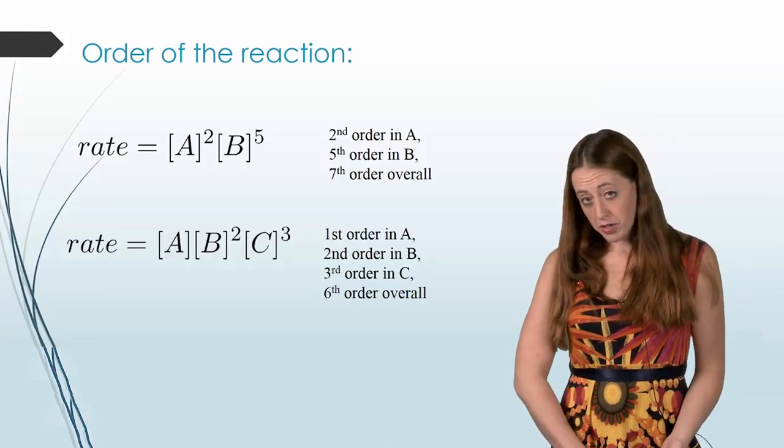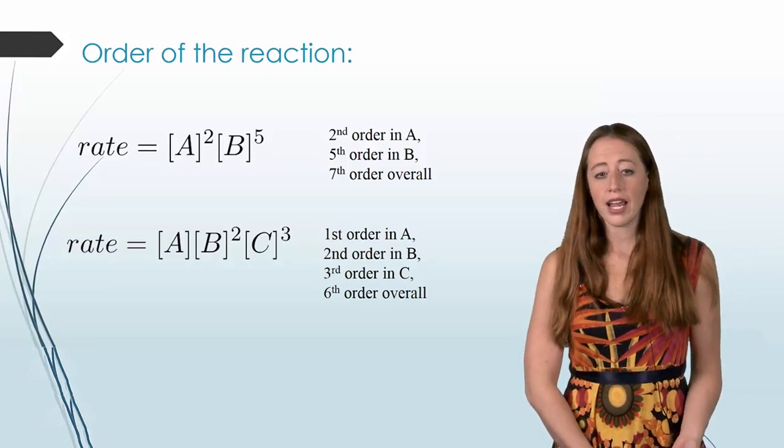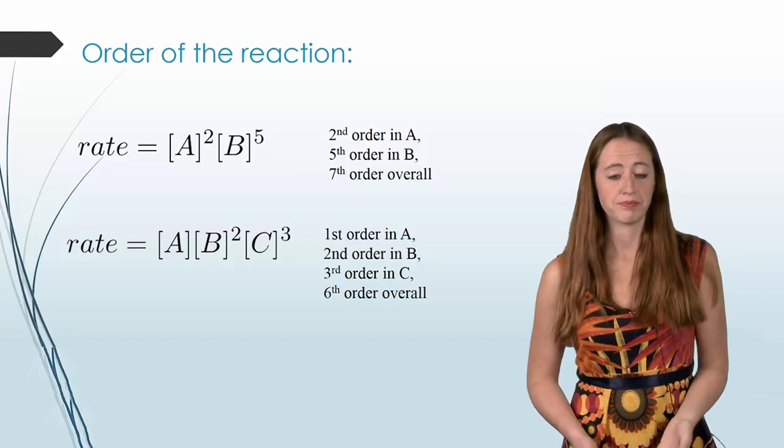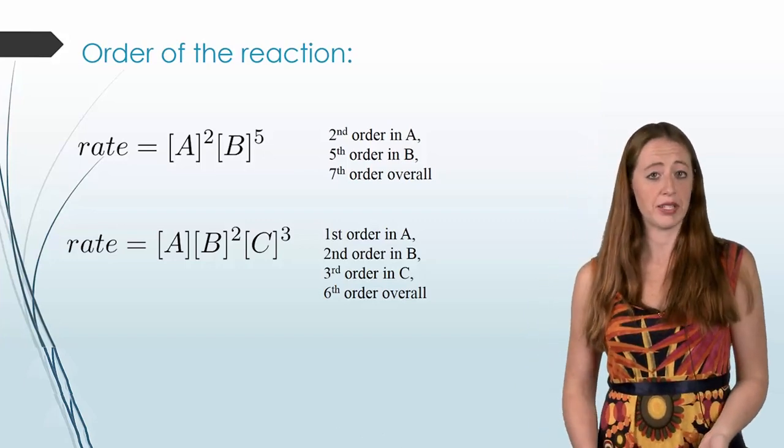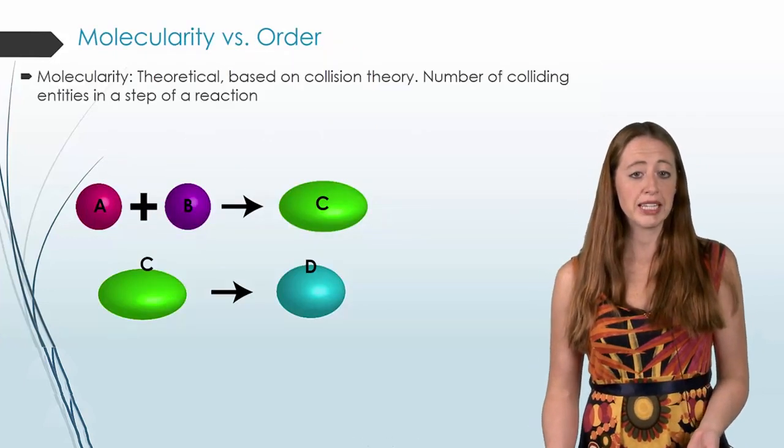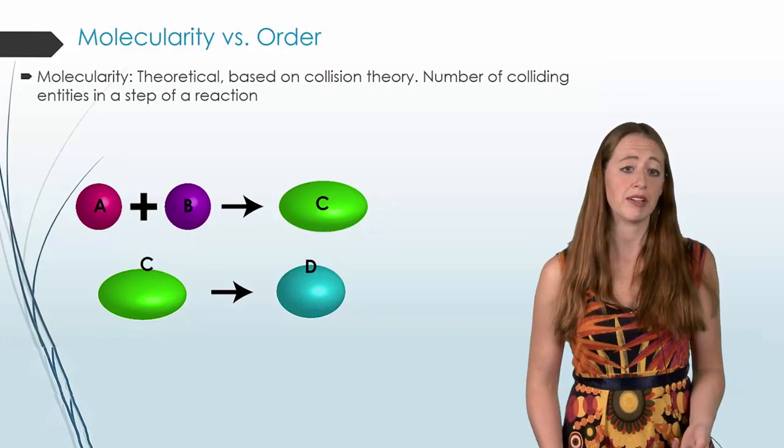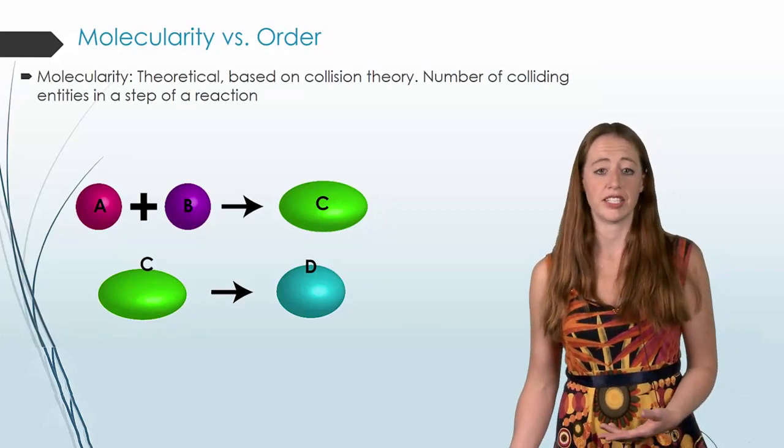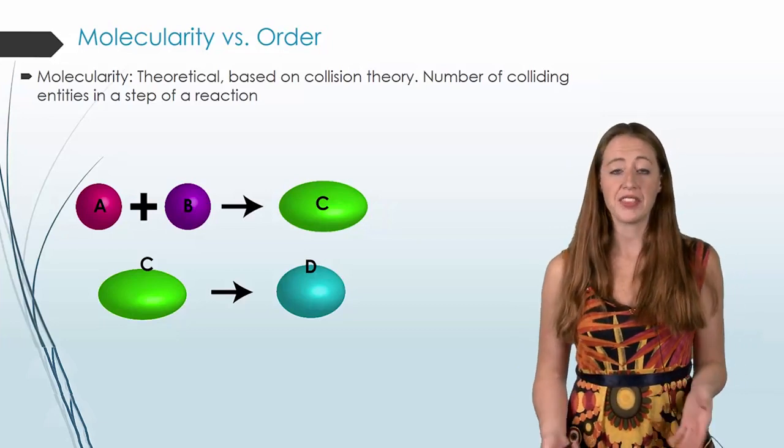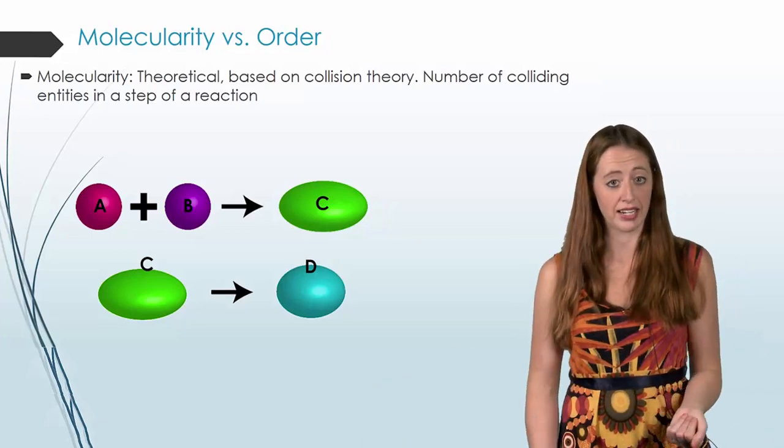So this comes off the rate law and is usually experimentally determined. It's very different than what molecularity is. So with molecularity, this is a theoretical concept that is based on collision theory. So think back to our very brief introduction on collision theory. And this was the idea that molecules in order to react must first collide.